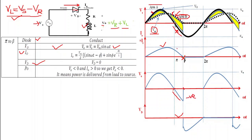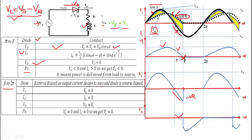From π to β, the current i₀ is positive but V₀ is negative, so output power P₀ = V₀ × i₀ is less than zero — P₀ is negative. Negative power means output power is delivered from load to source.